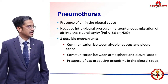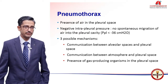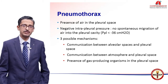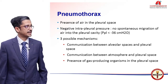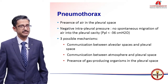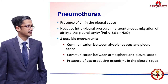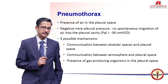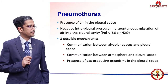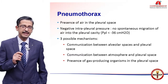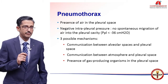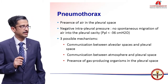The negative intrapleural pressure ensures that there's no spontaneous migration of air into the pleural cavity, because the pleural cavity has a negative pressure of 36 millimeters of water. When you think about it, there can be three possible mechanisms by which air can leak into the pleural cavity. First, if there is a communication between the alveolar and the pleural space.